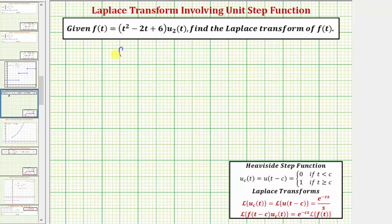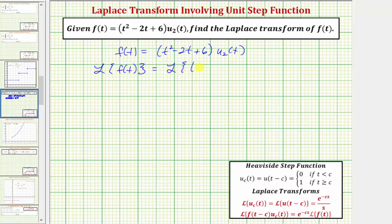Beginning with the given function f of t equals the quantity t squared minus two t plus six times u sub two of t, we'll take the Laplace transform of both sides. So we'll have the Laplace transform of f of t equals the Laplace transform of the quantity t squared minus two t plus six times u sub two of t. The Laplace transform of f of t is equal to big F of s. Now, because we have u sub two of t, we know that c must equal two.